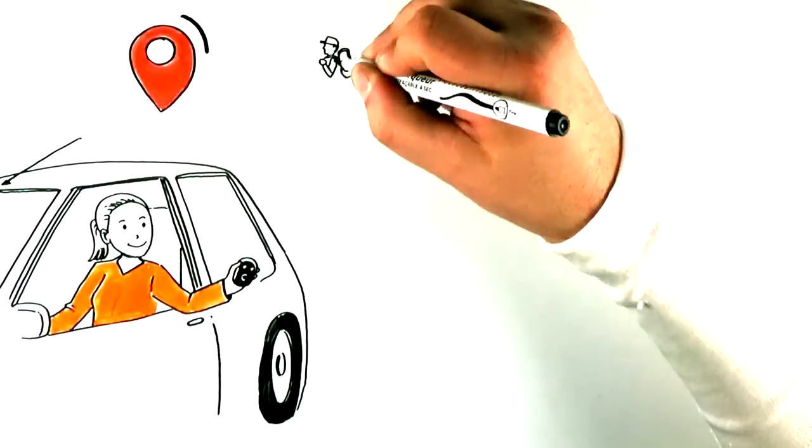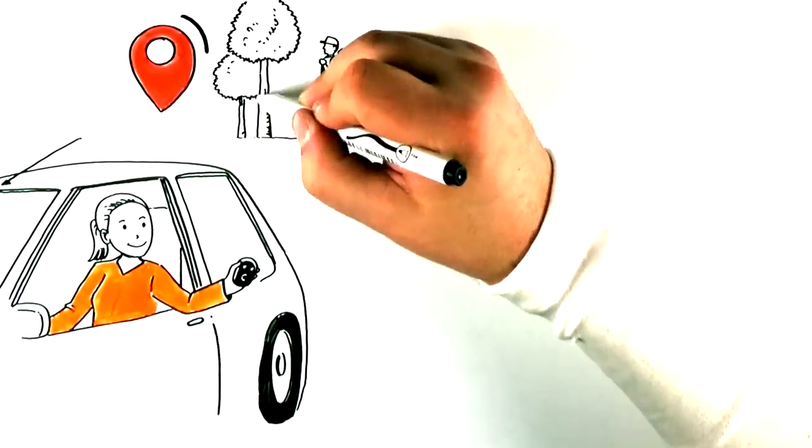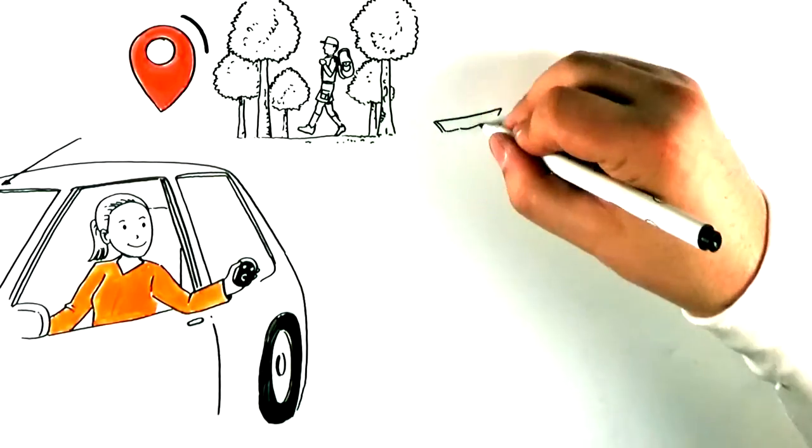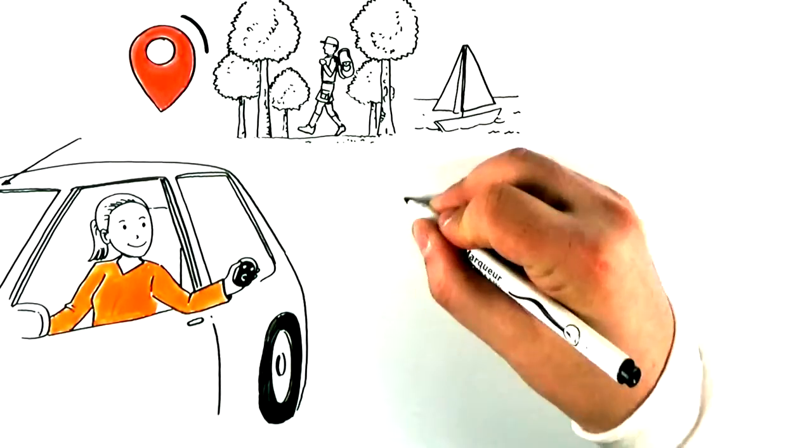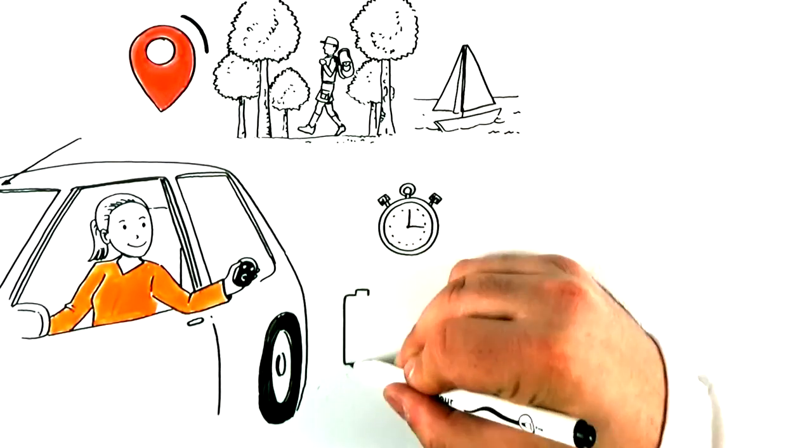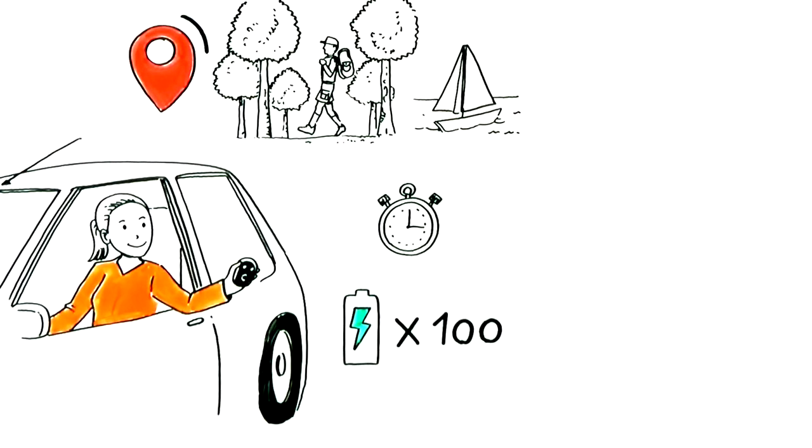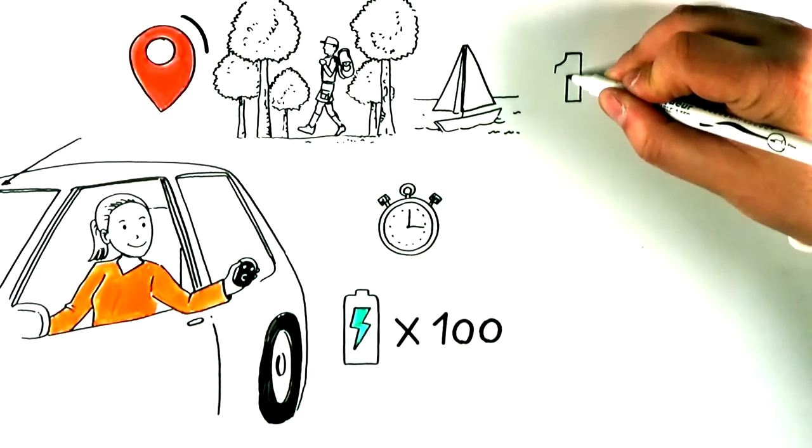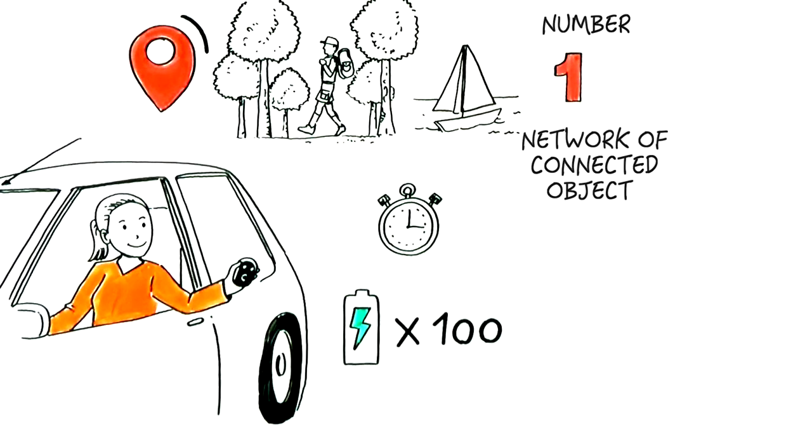A GPS tracker that allows an object, or person, to be located anywhere, from your smartphone or your computer. What's the great idea? The tracker's battery life is 100 times longer than the usual GPS. It's an independent and reliable geolocation system.